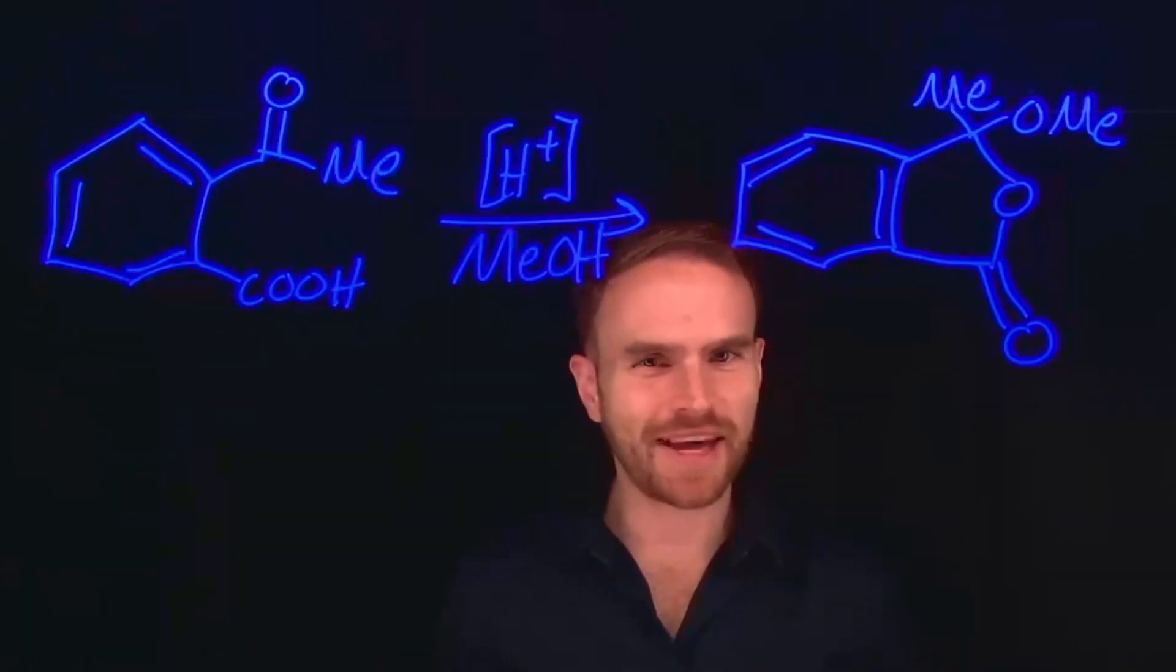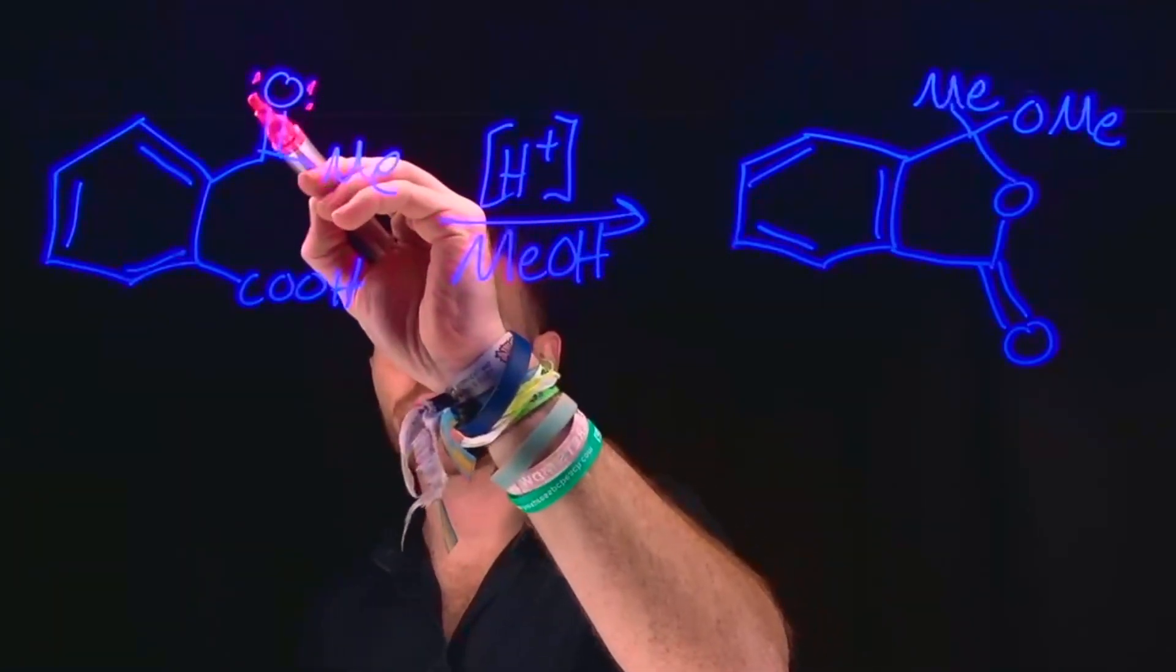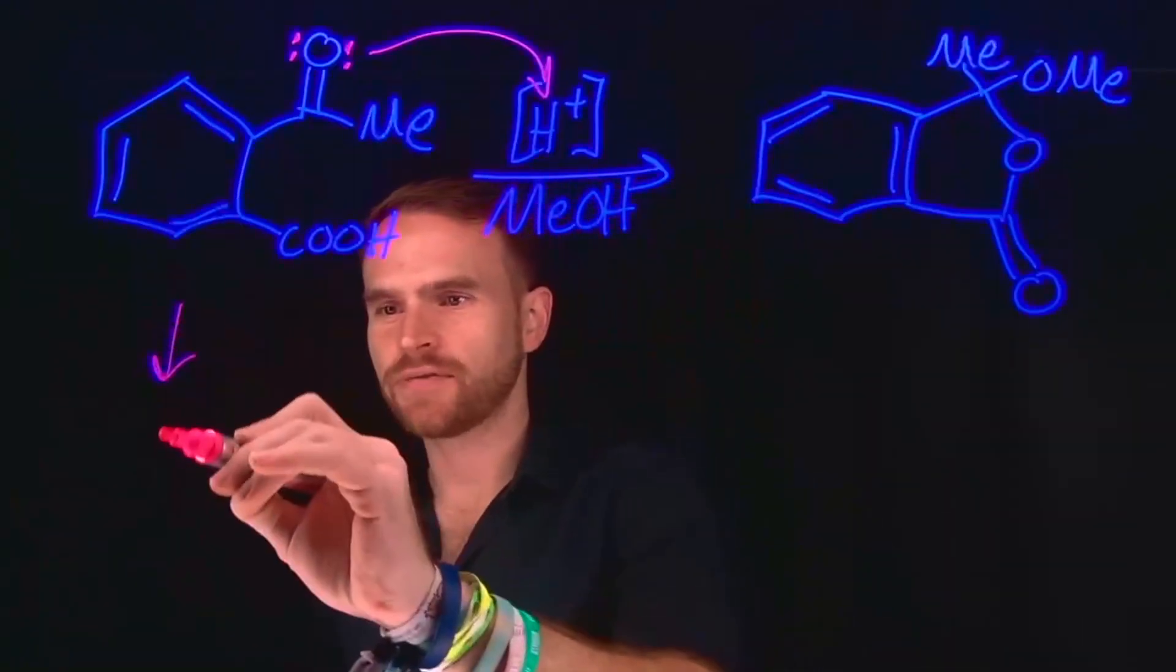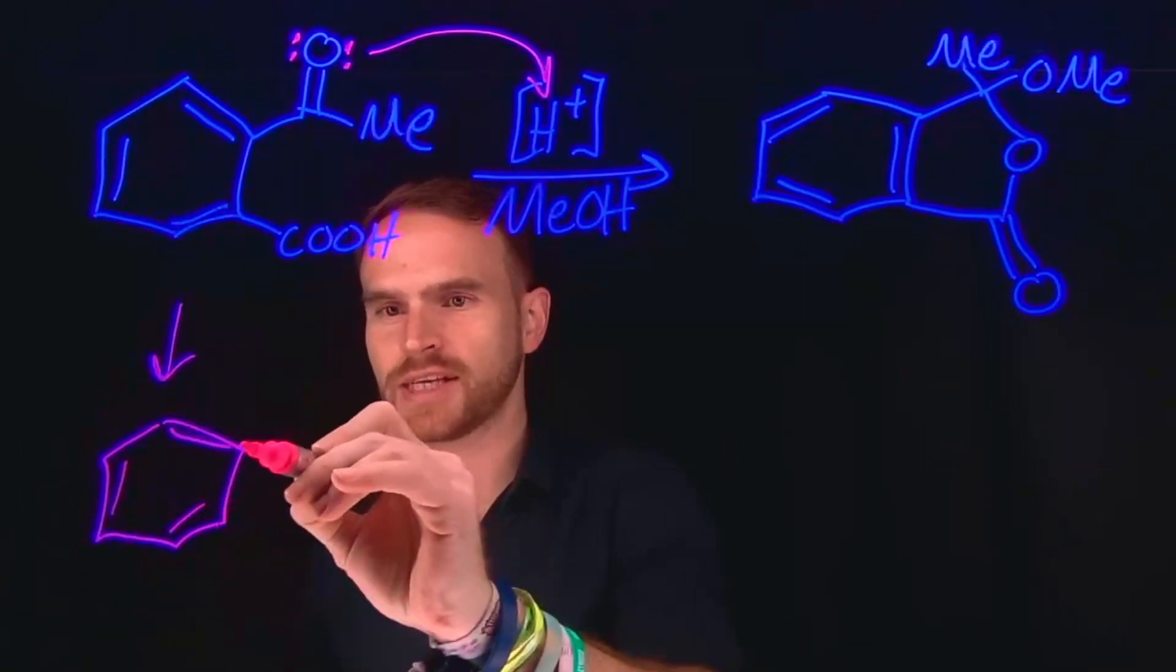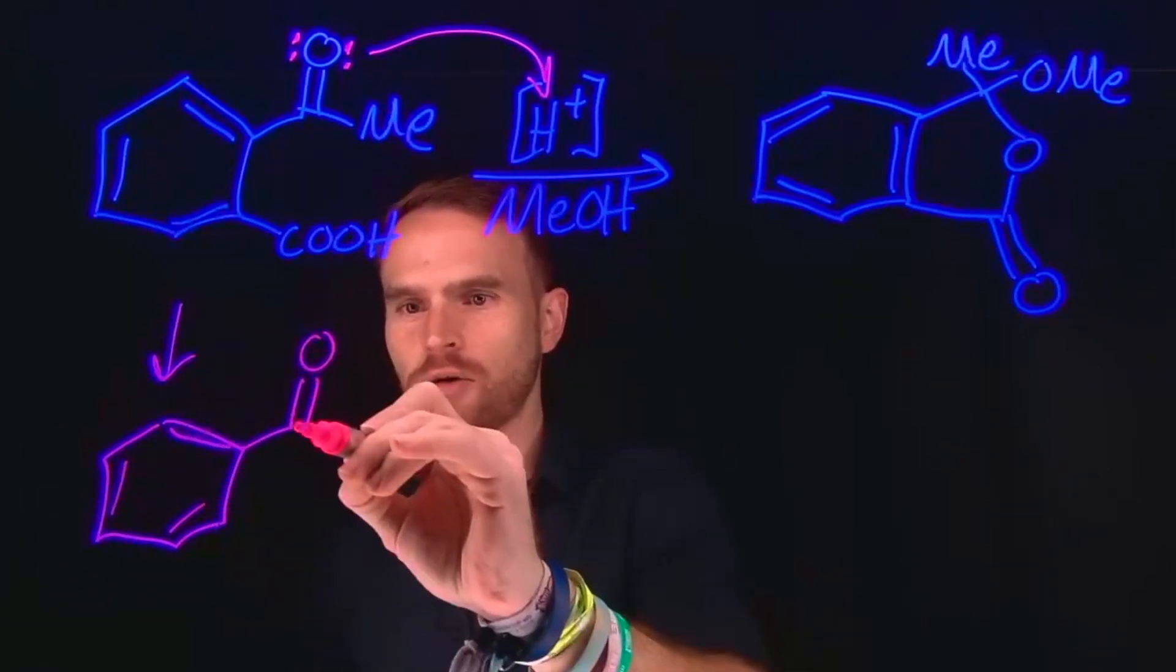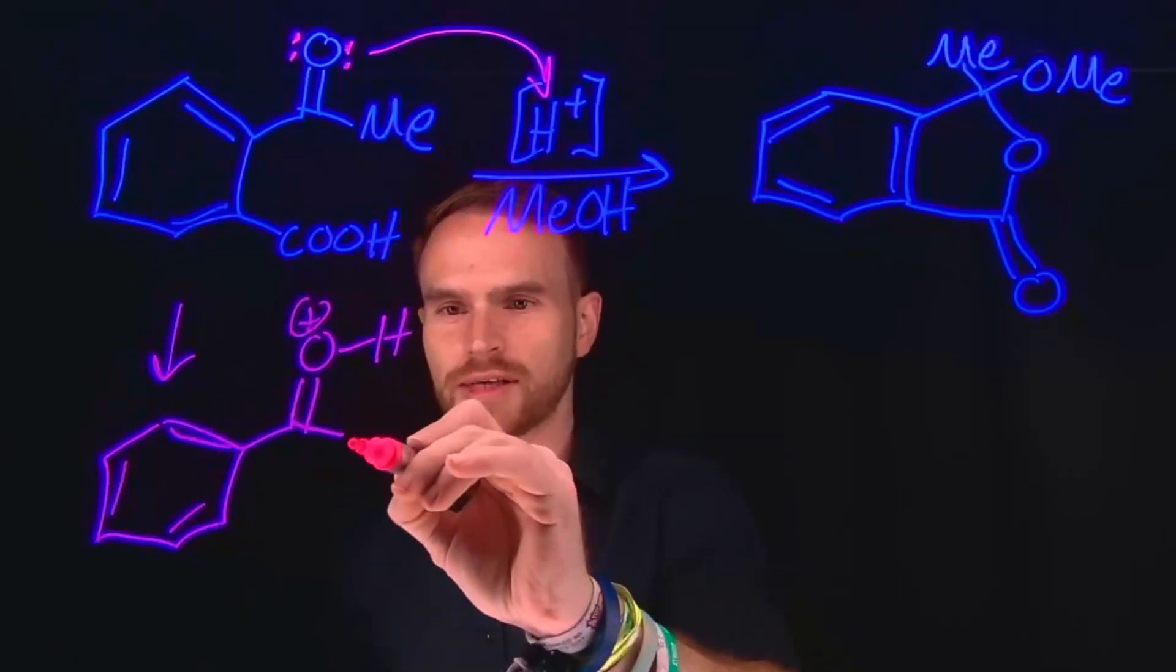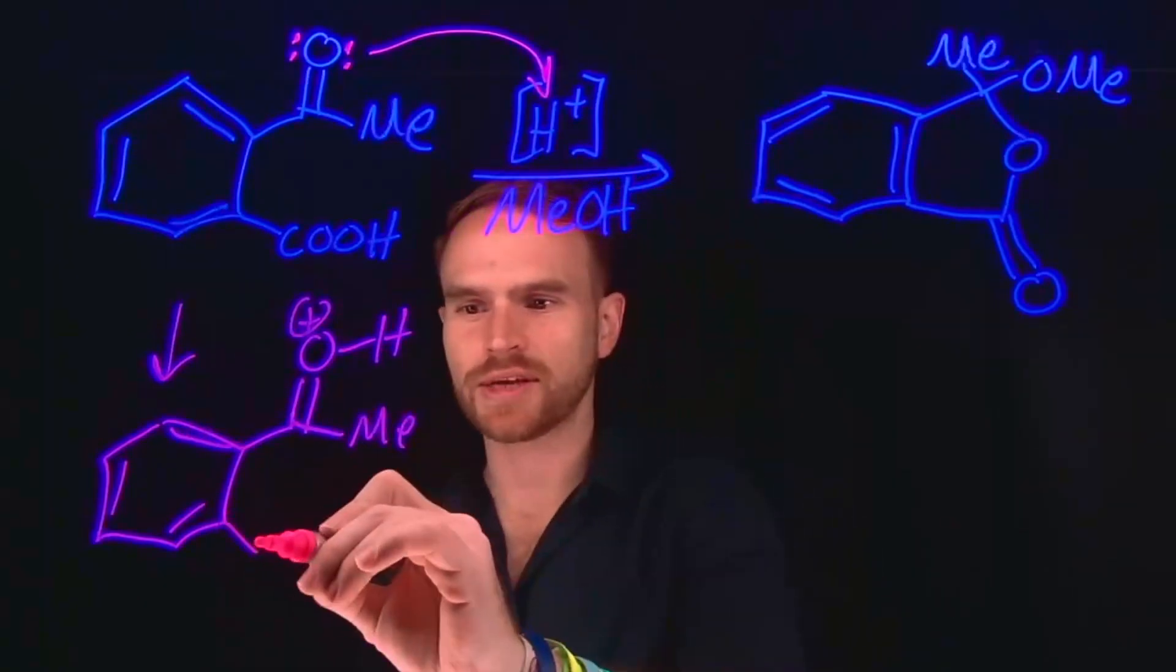The first step in this mechanism is likely one that you've seen before, where you can protonate the oxygen on a carbonyl species using an acid. So following protonation of that carbonyl oxygen, what we've done is we've turbocharged the electrophilicity of the carbon that is attached to this carbonyl oxygen. So importantly now, we have made this carbon position very susceptible to nucleophilic attack.